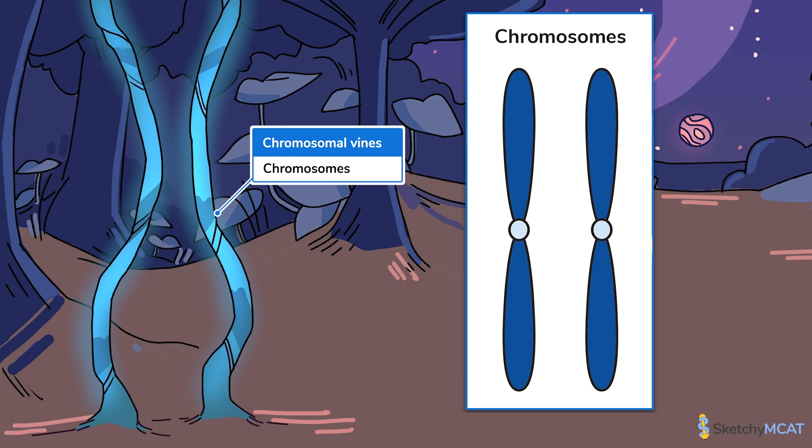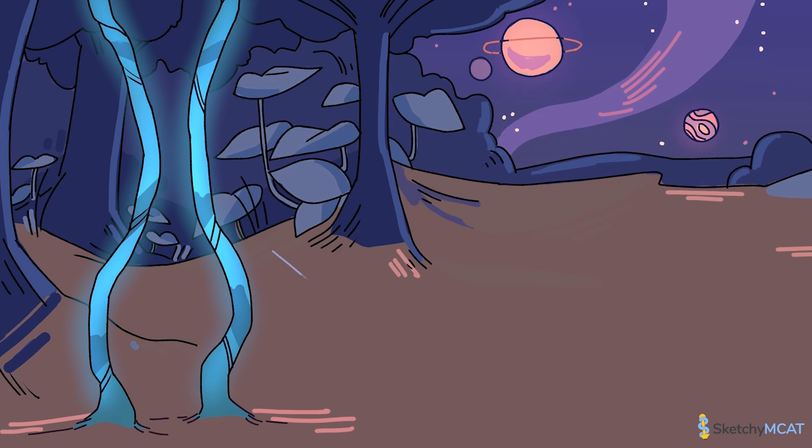These vines represent eukaryotic chromosomes. You'll notice these vines only have one strand, even though you probably usually see chromosomes drawn as that two-stranded X shape. Chromosomes are only found in that shape during mitosis and meiosis. When cells are not replicating, chromosomes are linear and single-stranded.